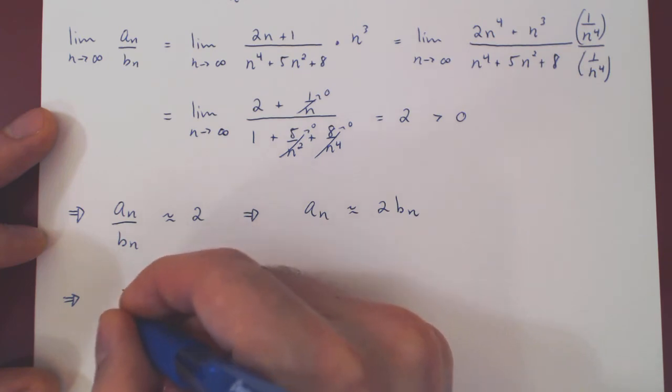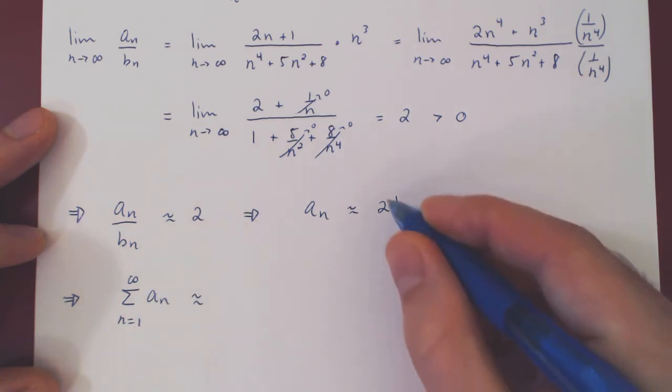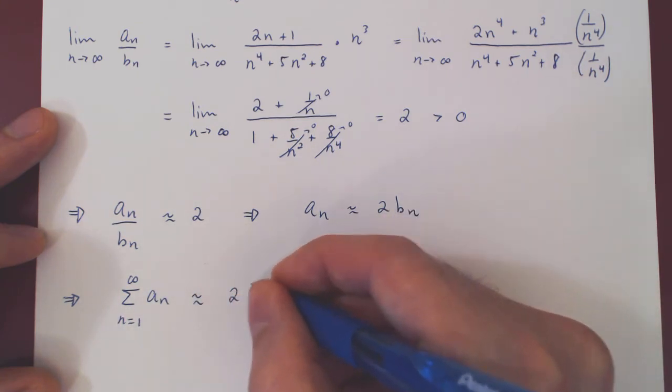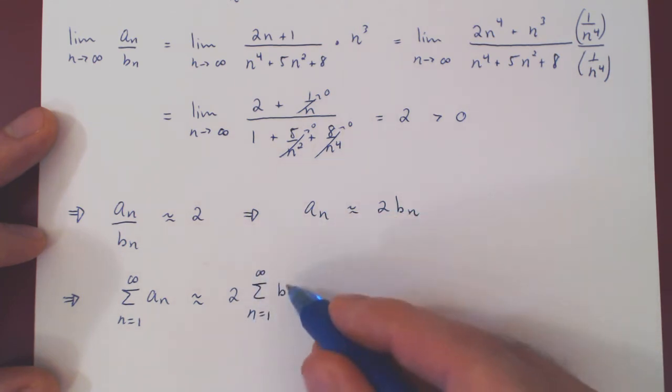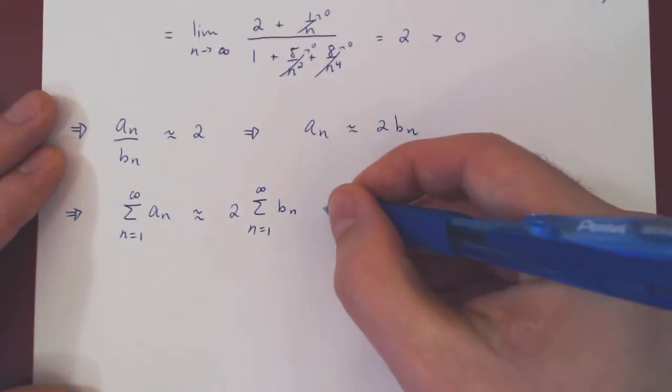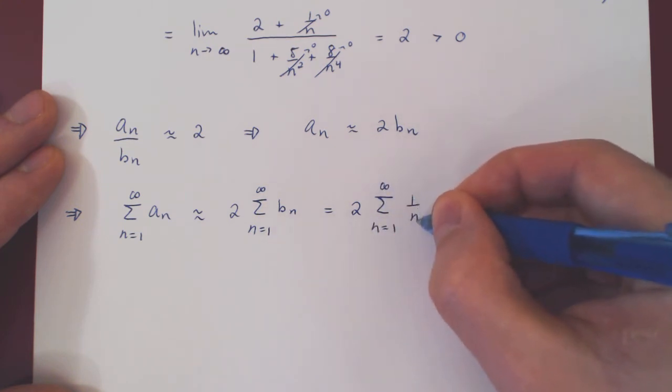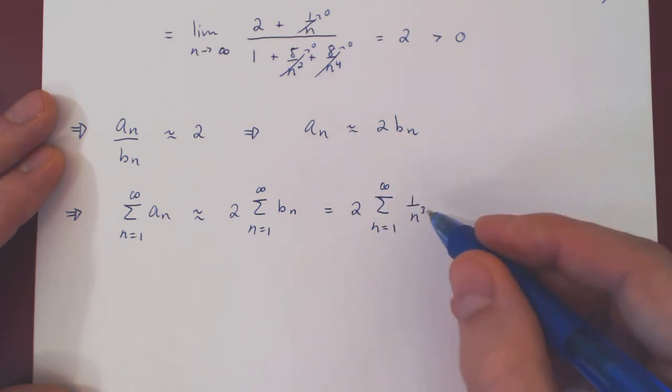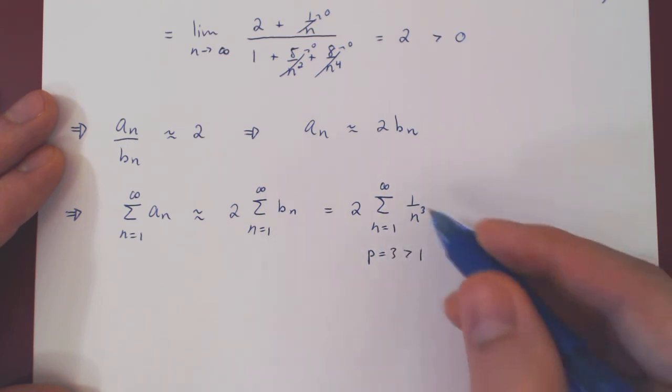Therefore, the series of AN is roughly 2 times BN. And now we can look at this series explicitly. BN is simply 1 over N cubed. This is a P series. And P is 3, which is strictly larger than 1. So this P series converges, therefore is a finite real number.